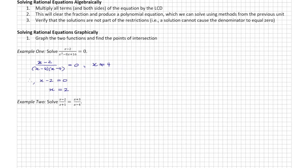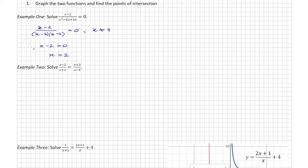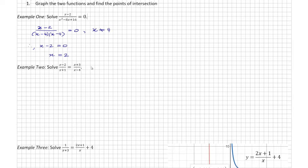In the next example, I have to solve x minus 2 over x plus 1 equals x plus 3 over x minus 4. Immediately I can write my restrictions: x cannot be equal to negative 1, and x cannot be equal to positive 4.